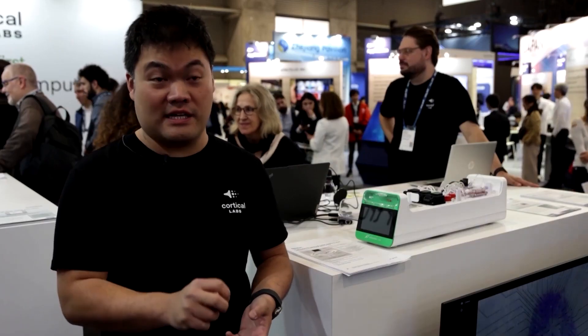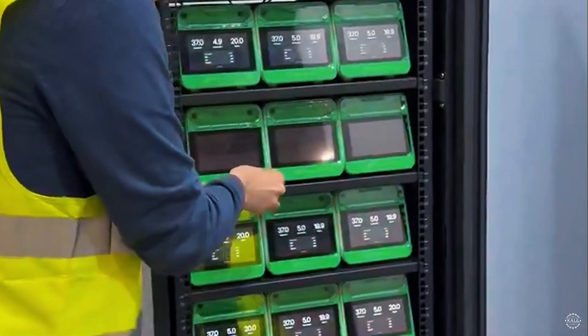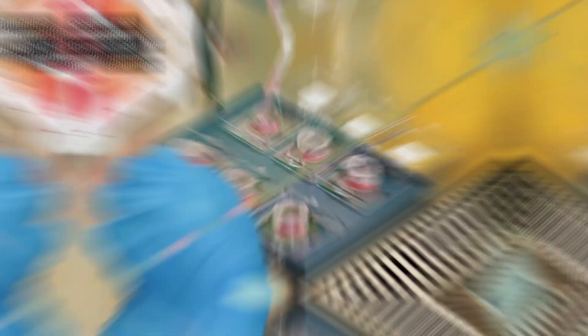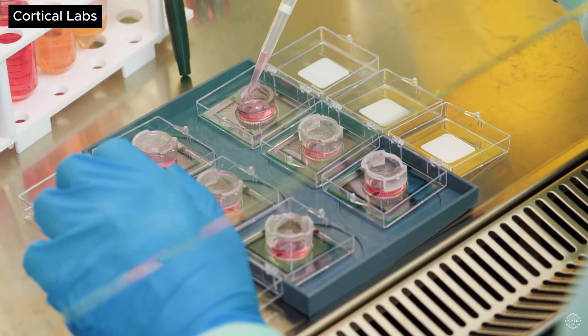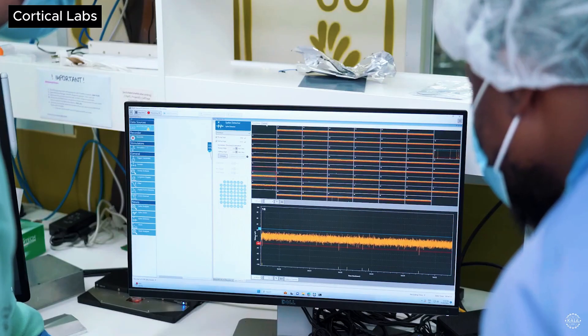We take blood or skin and we can transform them into stem cells and from stem cells into brain cells or neurons that we then use for compute and intelligence. The world has just seen the launch of the first-ever biological computer, a groundbreaking invention that combines human brain cells with silicon hardware to create a completely new kind of AI.